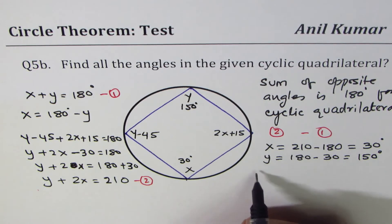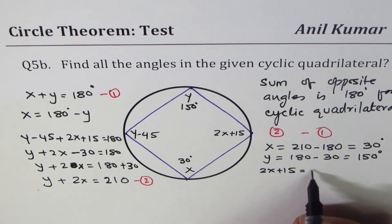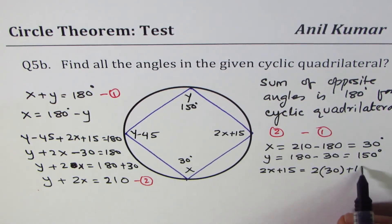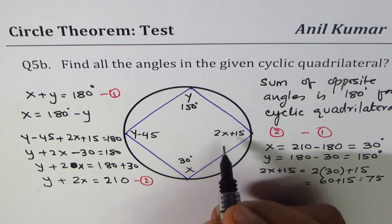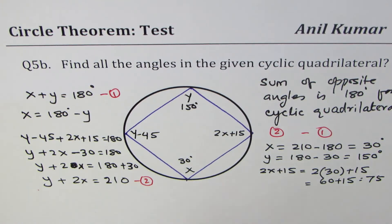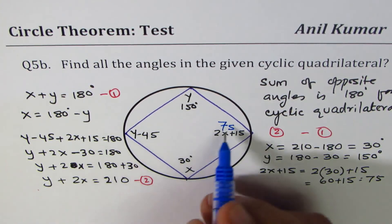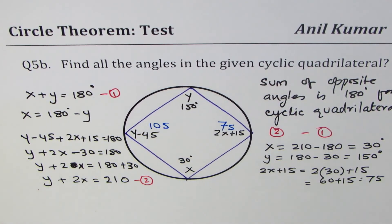Which we can see now 150 for y and 30 degrees for x. The other two angles, let's substitute. So 2x plus 15 will be 2 times 30 plus 15, and that gives us 60 plus 15, that is 75. So we get 75 here.